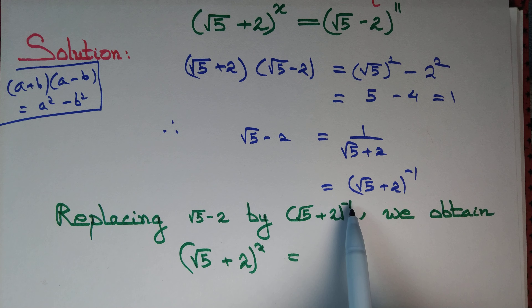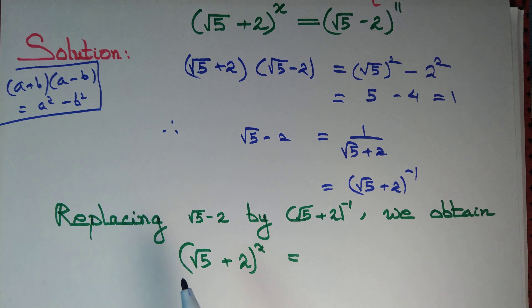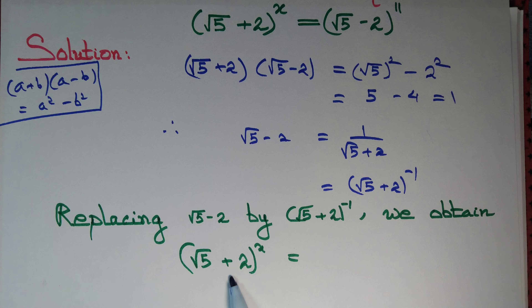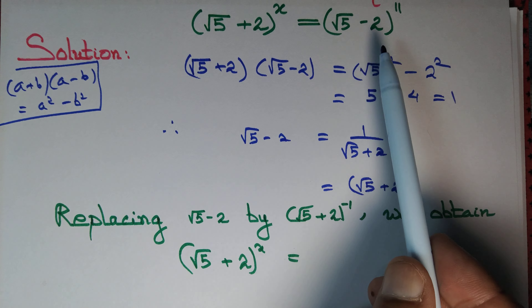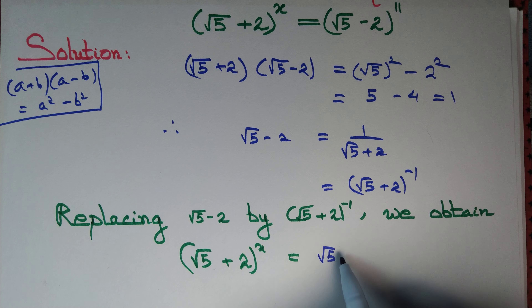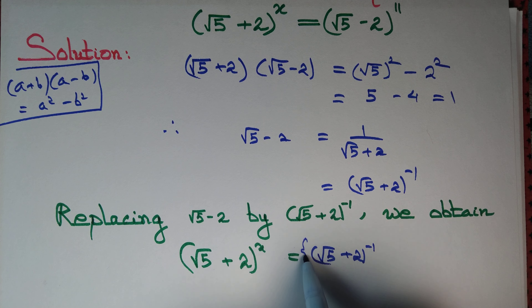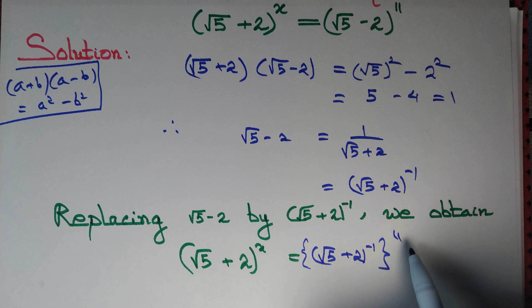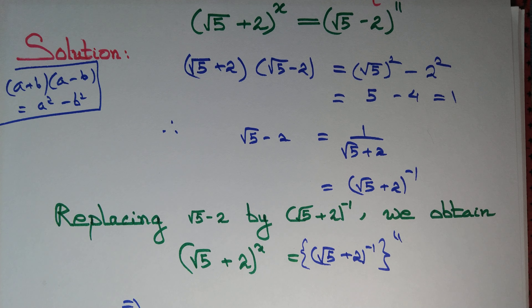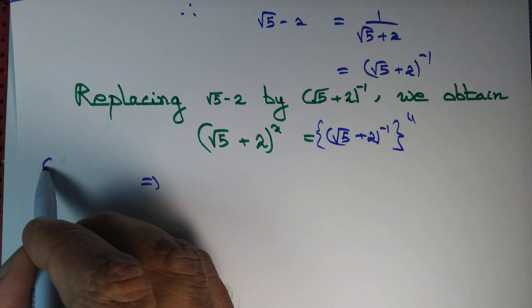Replacing (√5 - 2) with (√5 + 2)^(-1): the left-hand side stays as (√5 + 2)^x, and the right-hand side becomes [(√5 + 2)^(-1)]^11.